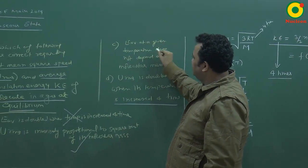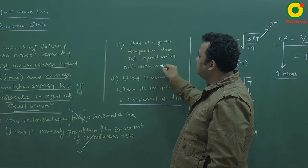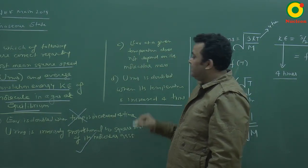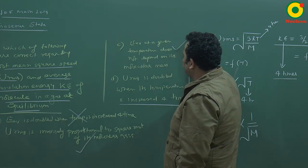E average at a given temperature does not depend on its molecular mass. So if I fix this one, then this option will be correct.